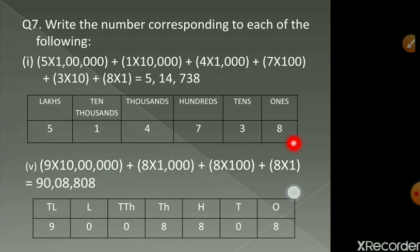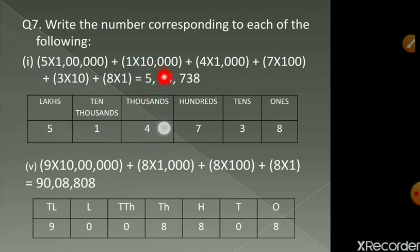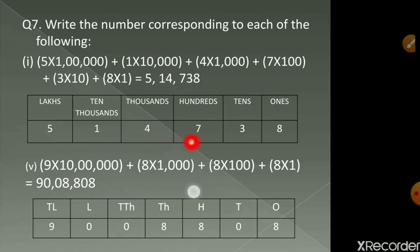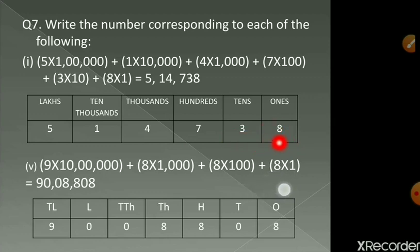Here we start with 5 × 1 lakh — that means 5 is in the lakhs place. Then 1 × 10 thousand — so 1 in the ten-thousands place. Then 4 × 1 thousand — 4 in the thousands place. Then 7 × 100 — 7 in the hundreds place. Then 3 × 10 — 3 in the tens place. And 8 × 1 — 8 in the ones place.